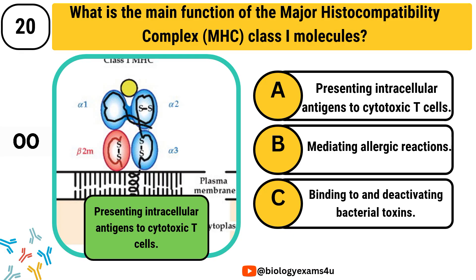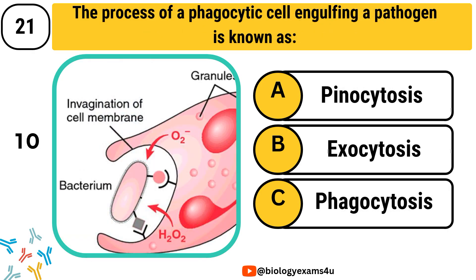Question number 21. The process of a phagocytic cell engulfing a pathogen is known as: Option A, pinocytosis. Option B, exocytosis. Option C, phagocytosis. The answer is phagocytosis.